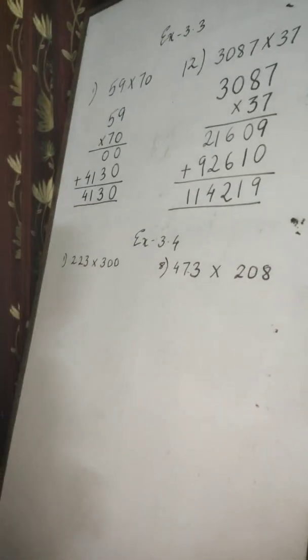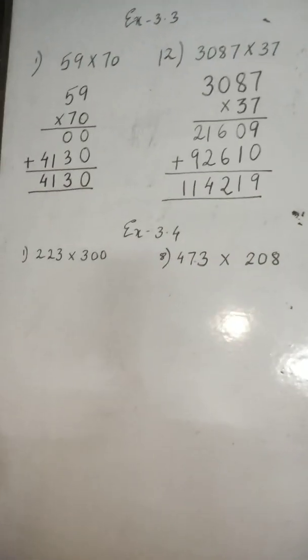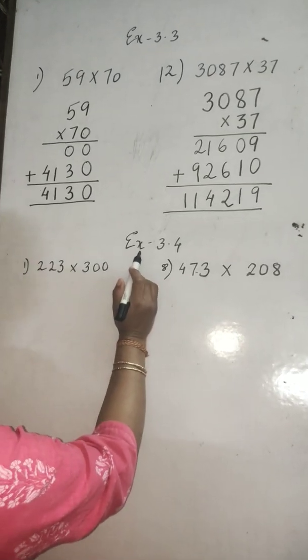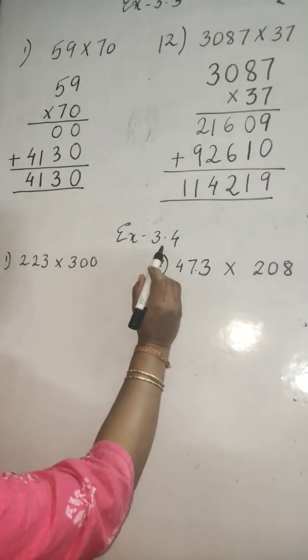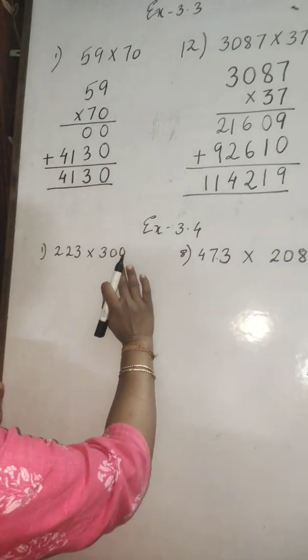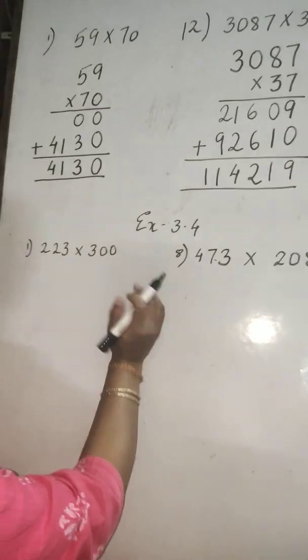I hope you all understood how to multiply with a 2-digit number. Now the second exercise, exercise 3.4. I will show you how to multiply with a 3-digit number.